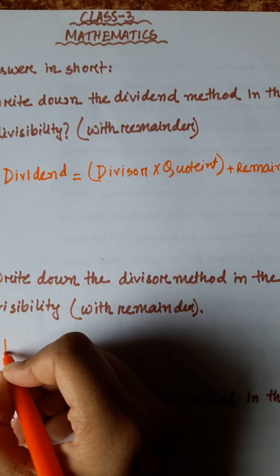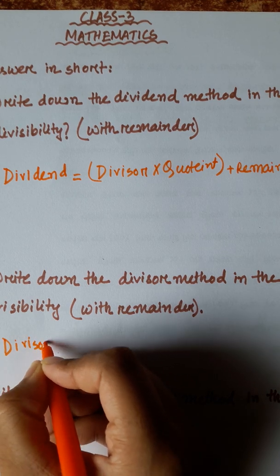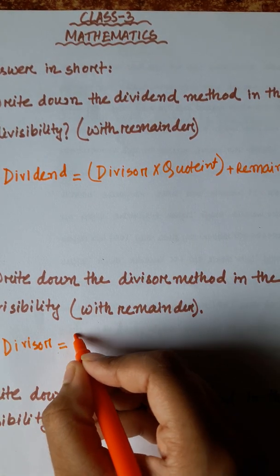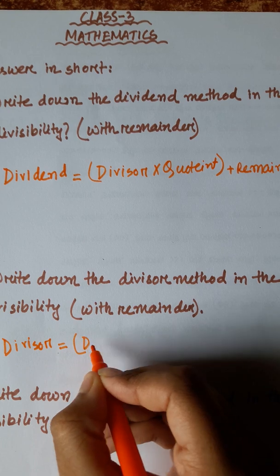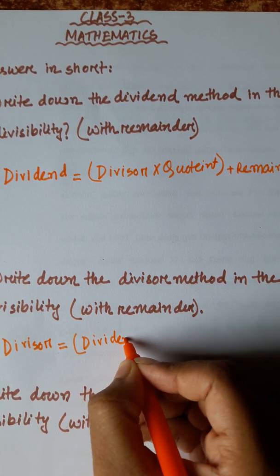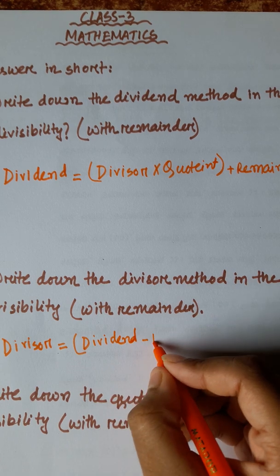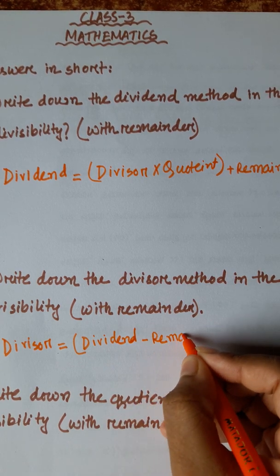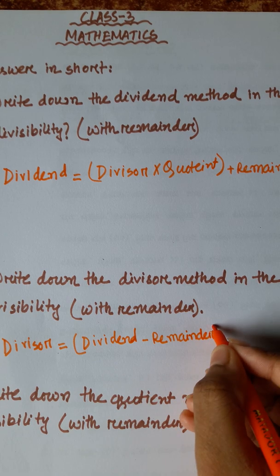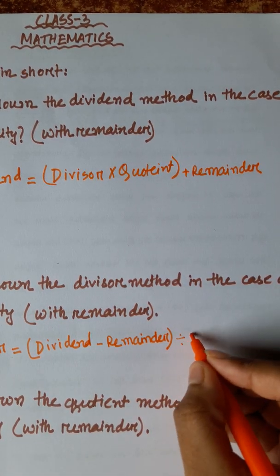Let's write it down. Divisor is equal to dividend minus remainder, divided by quotient.